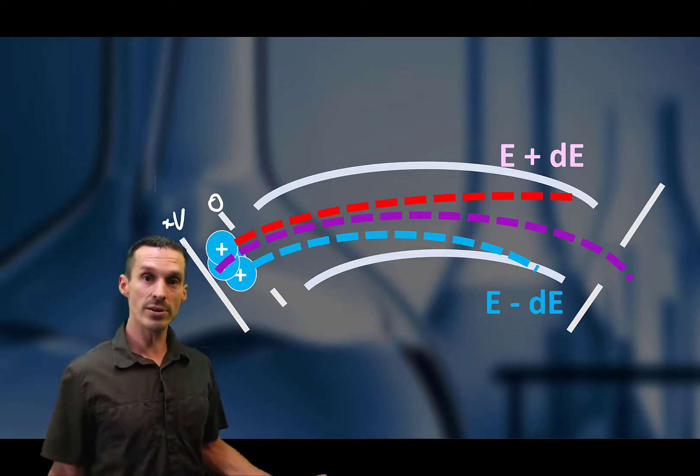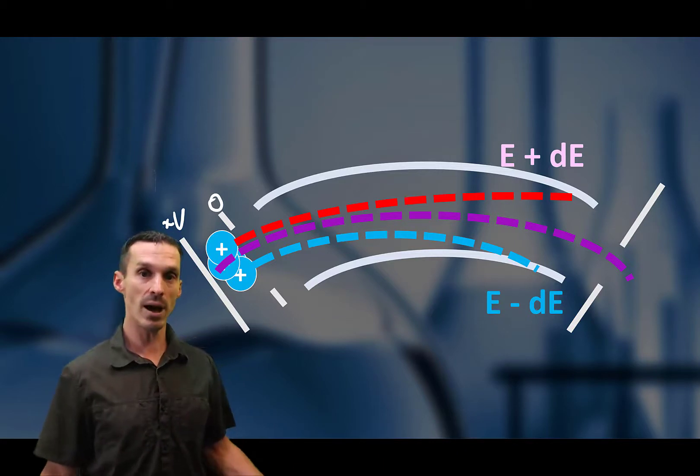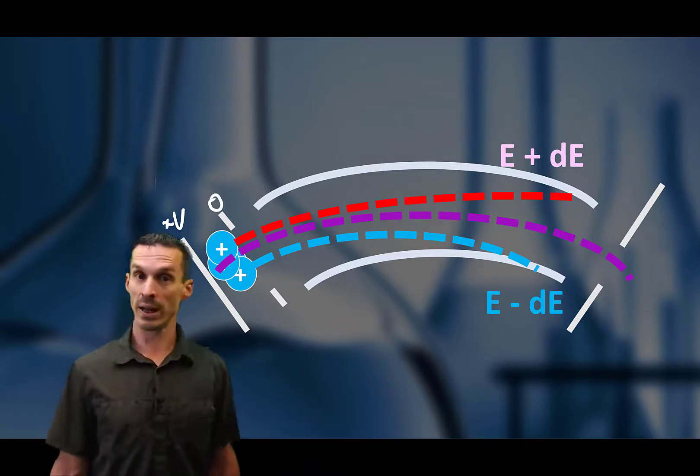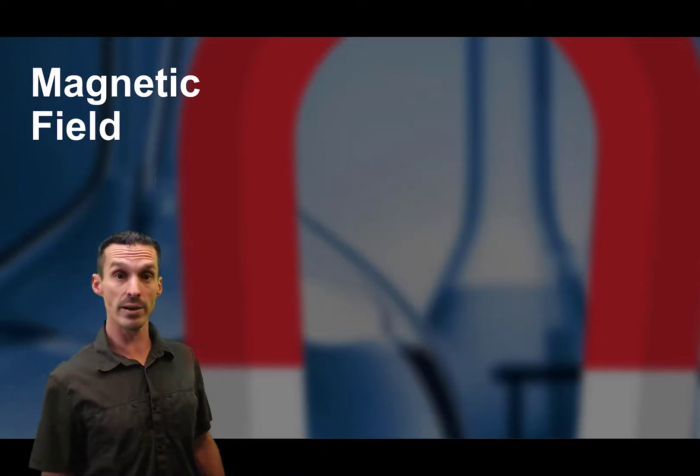So in summary, an electric sector is simply a kinetic energy separator. You can pick ions according to a specific kinetic energy. Okay, let's put that on pause. We'll go back to the magnetic sector now.